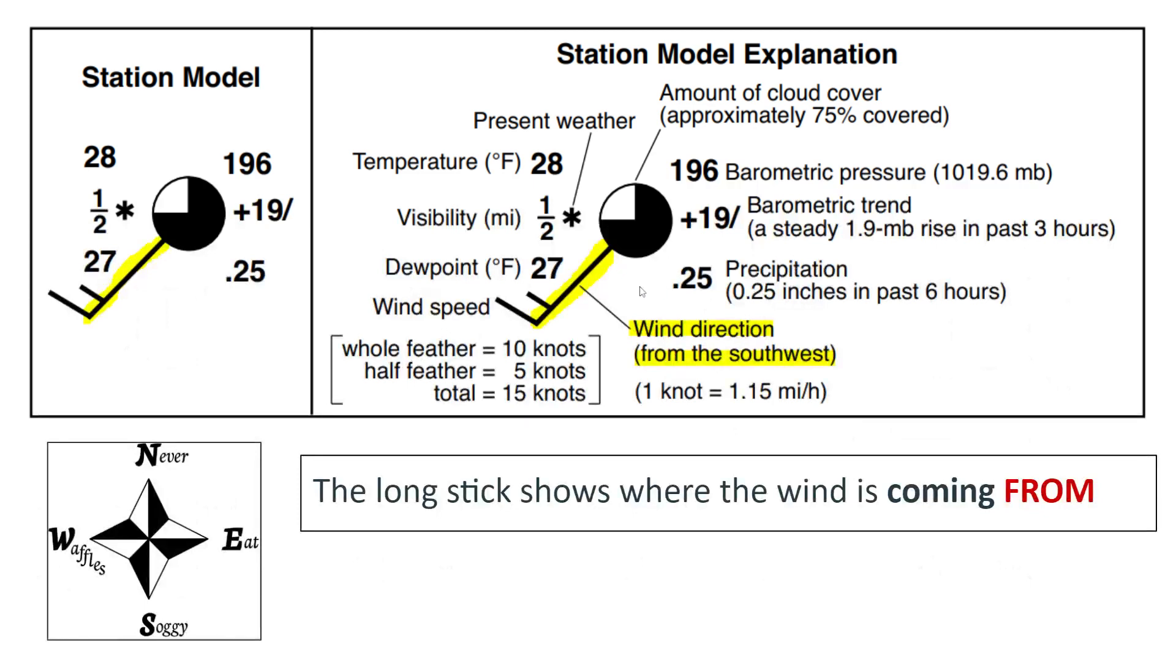Next, wind direction is shown by this long line here where the feathers come out from. So wind direction, it gives you in the explanation, the direction in which the long stick is pointing towards is actually where the wind is coming from. So in this case, the stick is pointing towards the southwest. So the wind direction is from the southwest. Remember, it's showing where the wind is coming from.